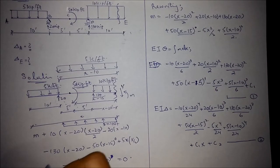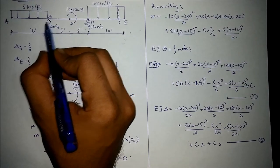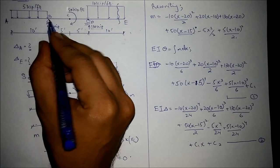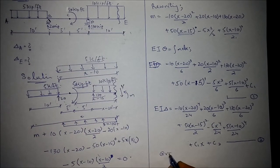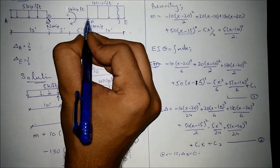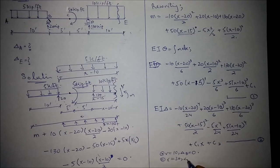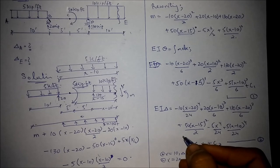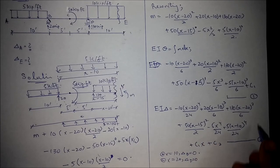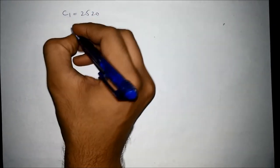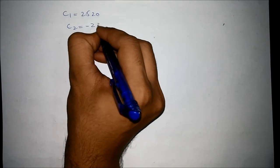For boundary conditions: deflection at B (x = 10) is zero, and deflection at D (x = 20) is also zero. Substituting these values into Equations 1 and 2, we solve for the integration constants and obtain C1 = 25203 and C2 = −23117.